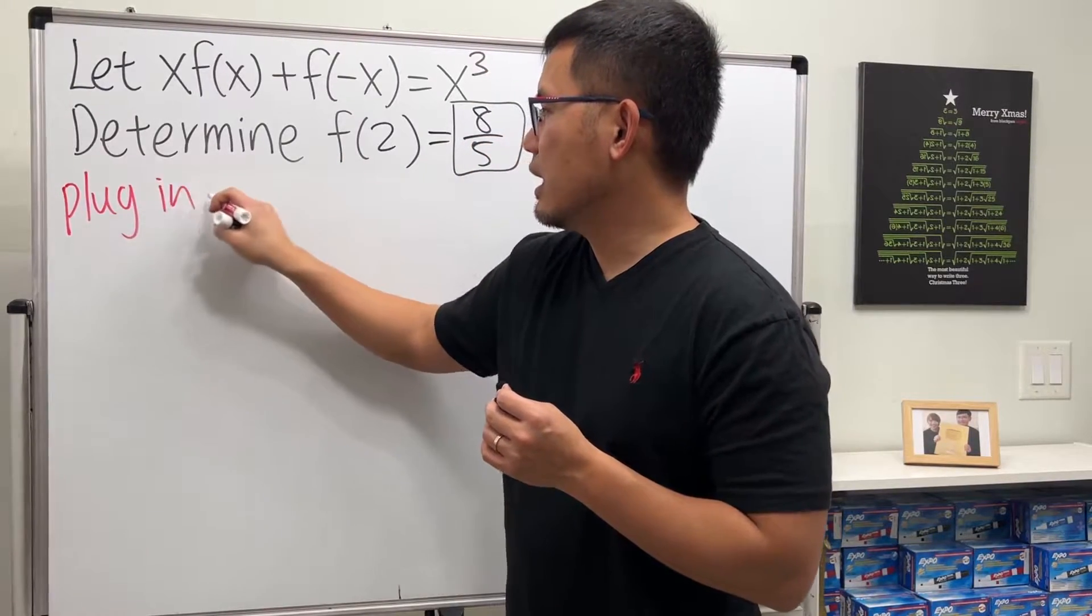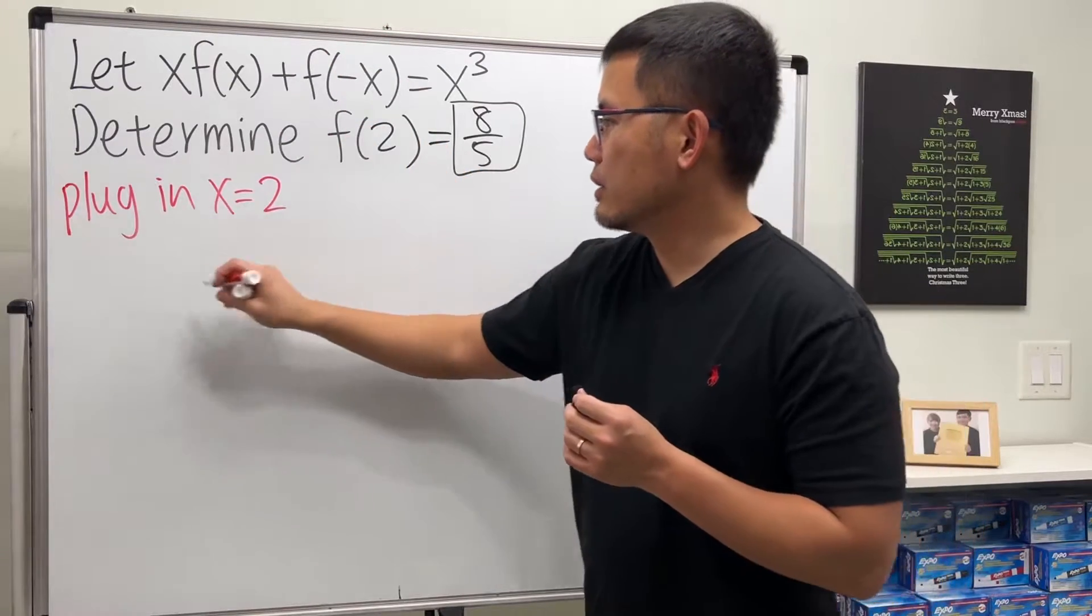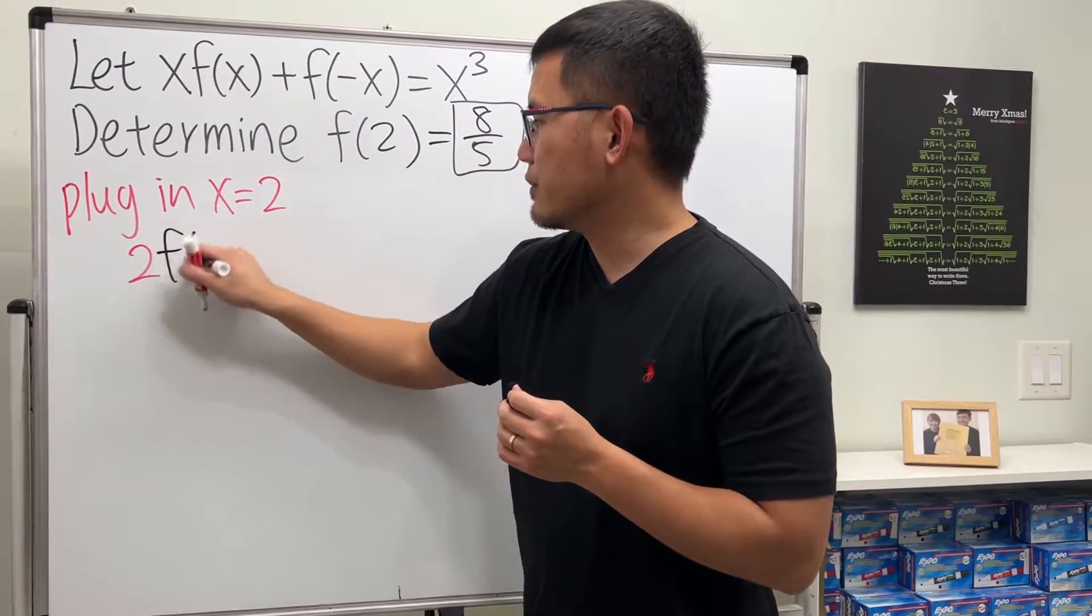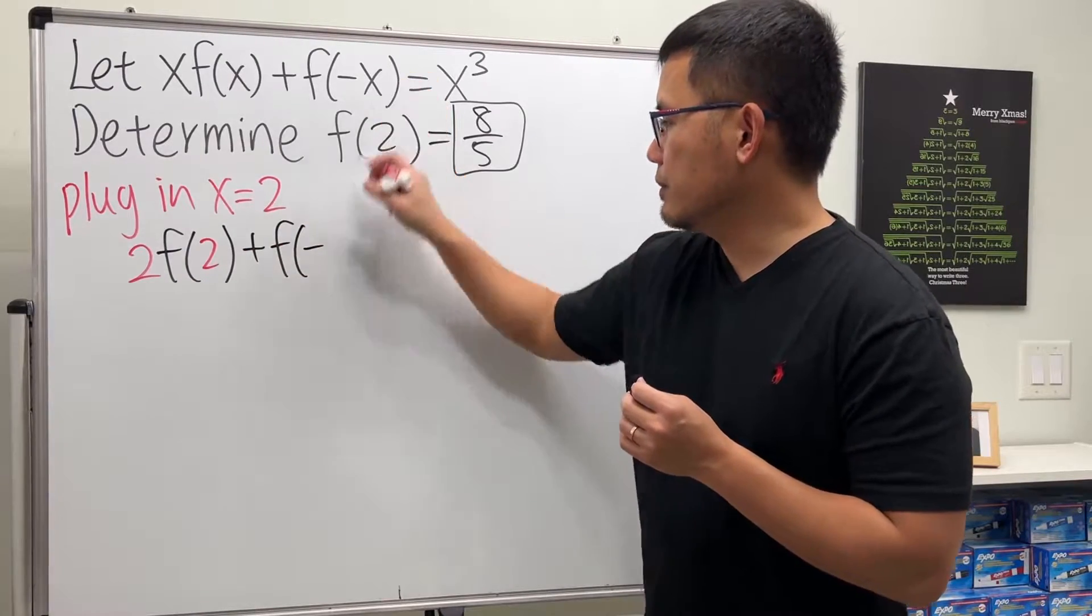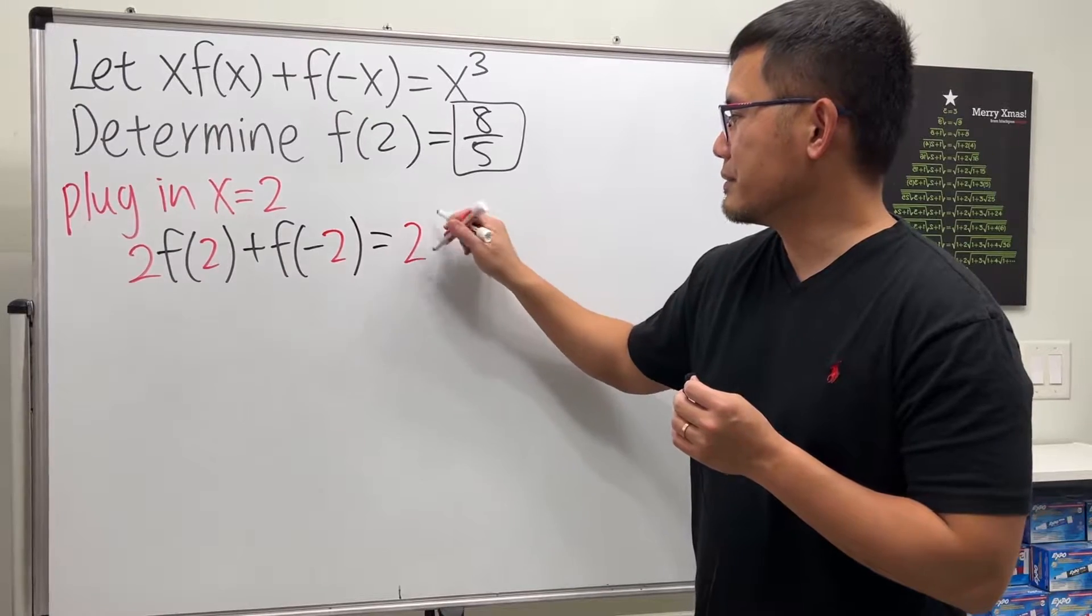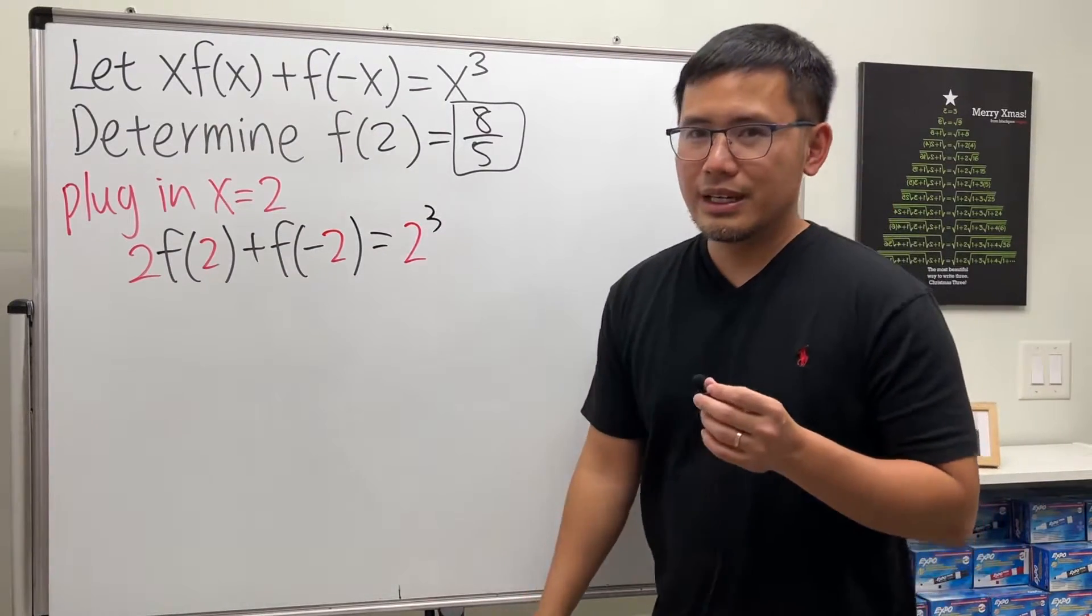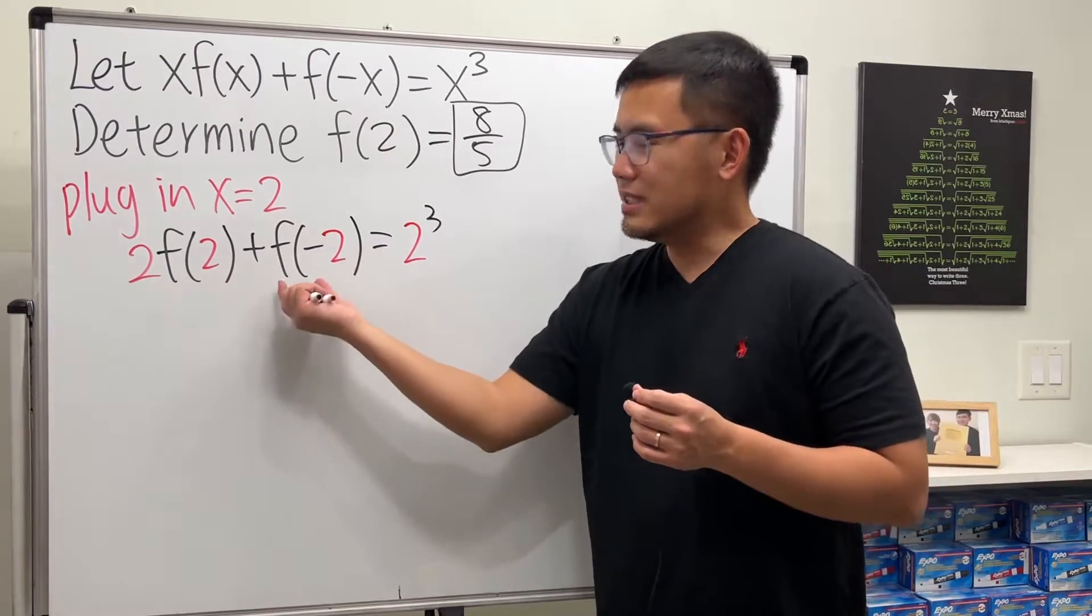So let's go ahead, of course the natural thing is just plug in x = 2, and that will give us 2f(2) + f(-2) = 2³, which is 8. Of course, but this is not enough because I cannot just solve for this. I don't know how big this is, right?